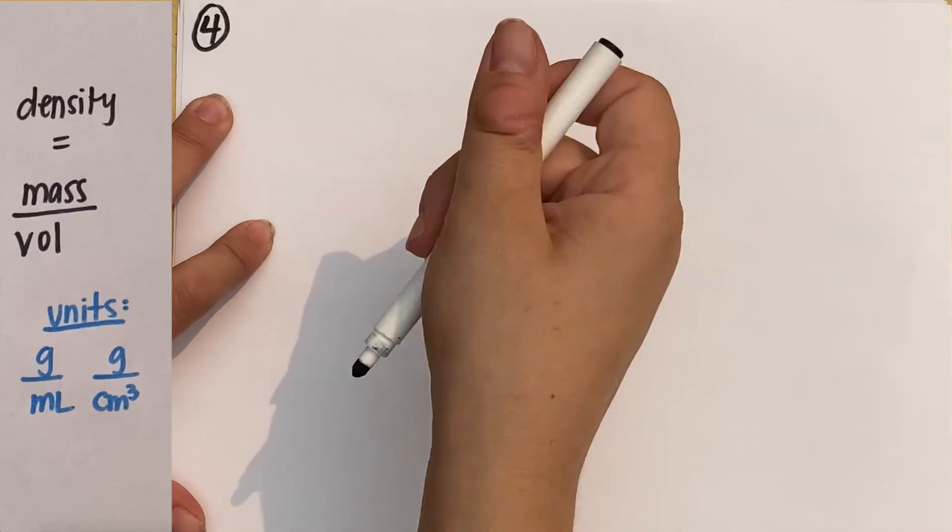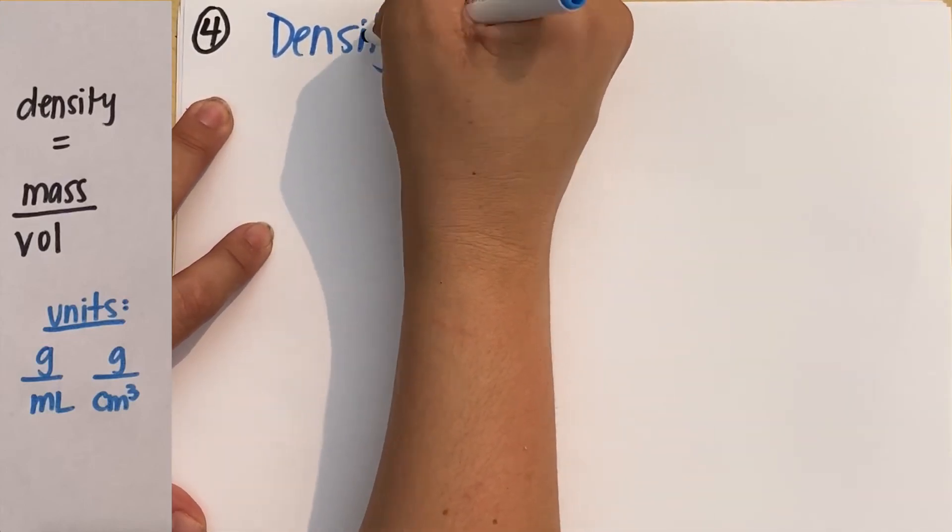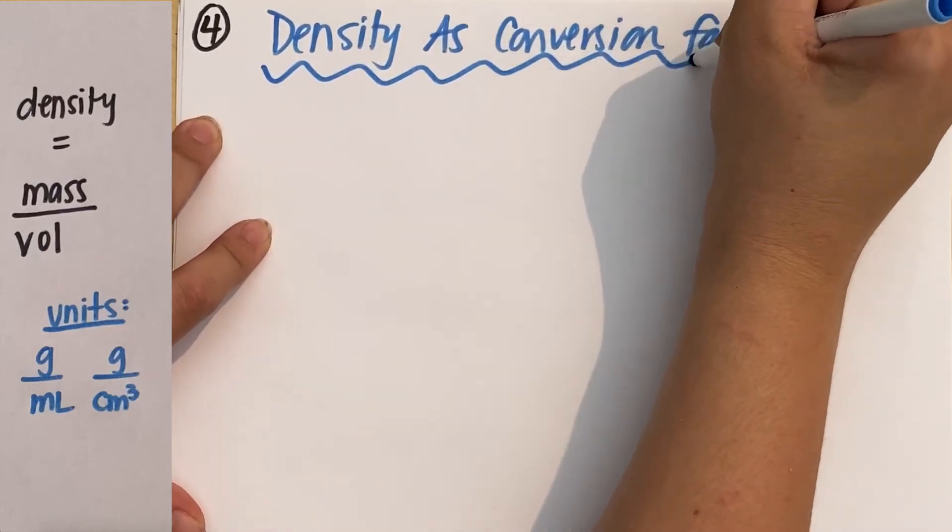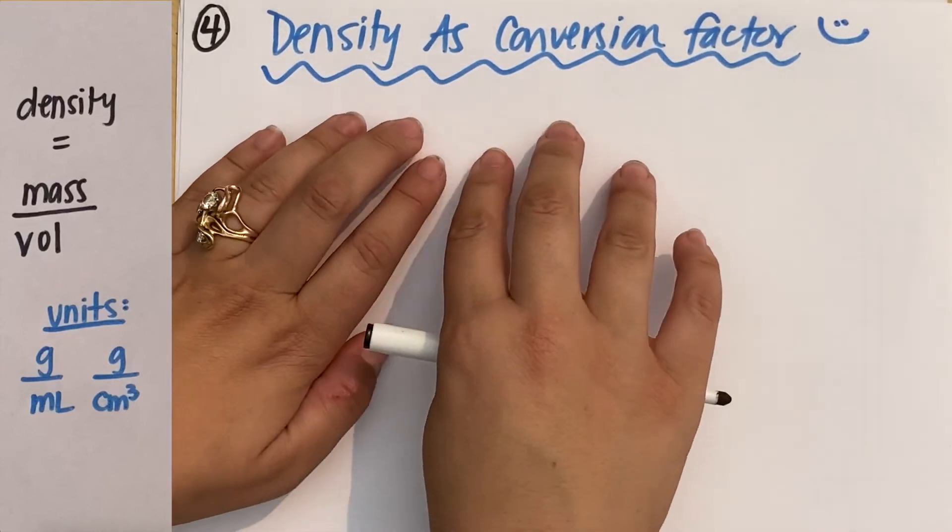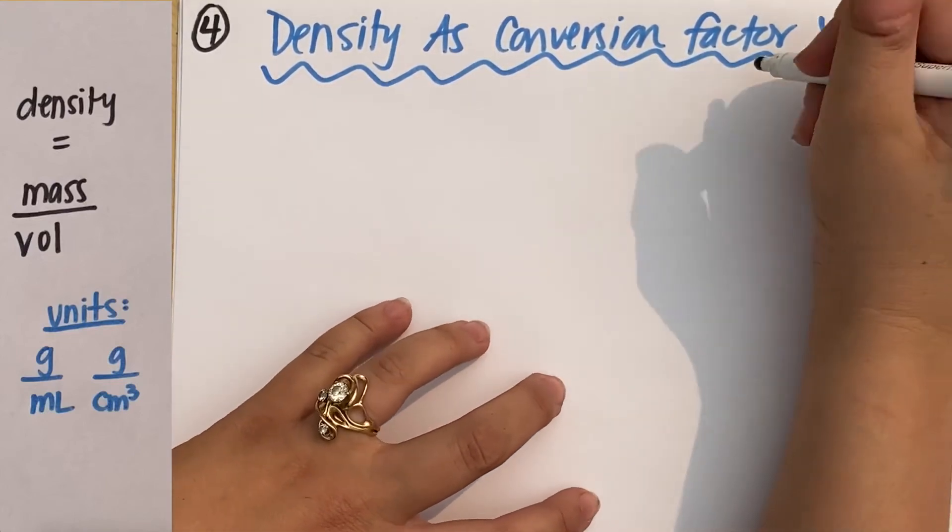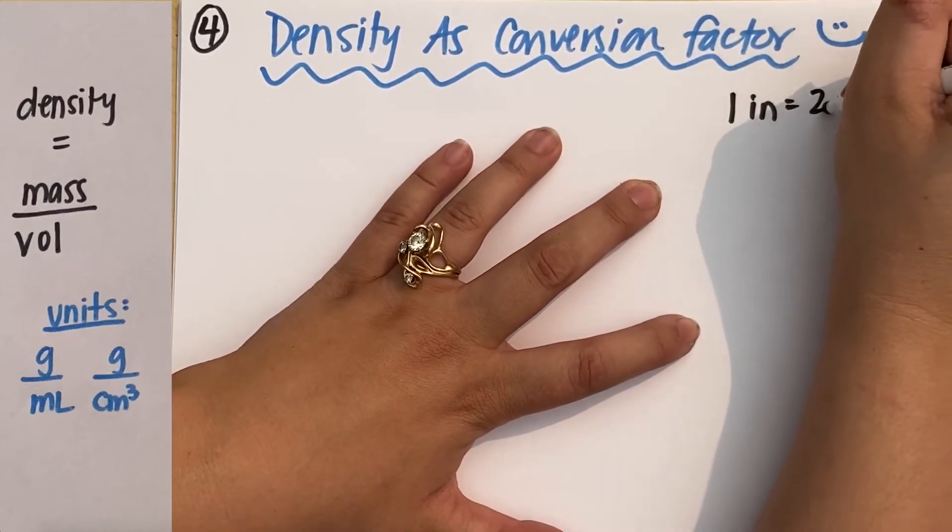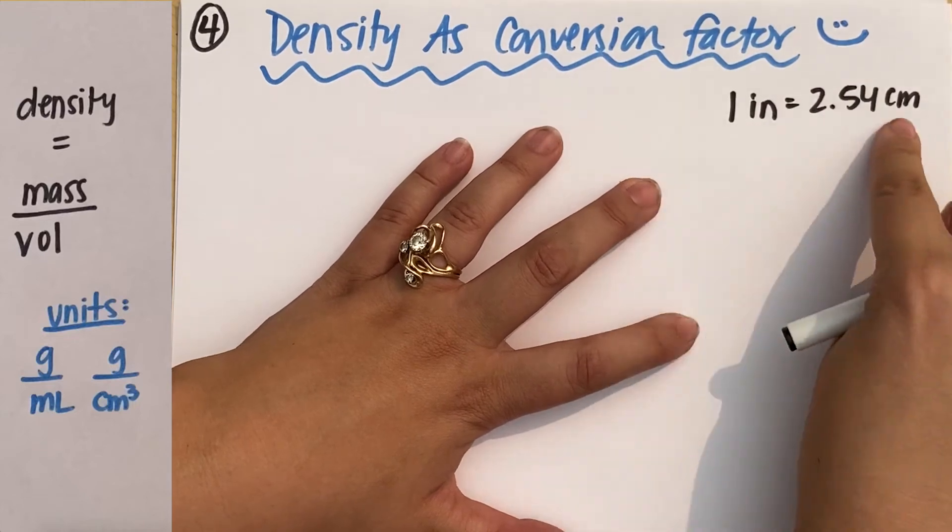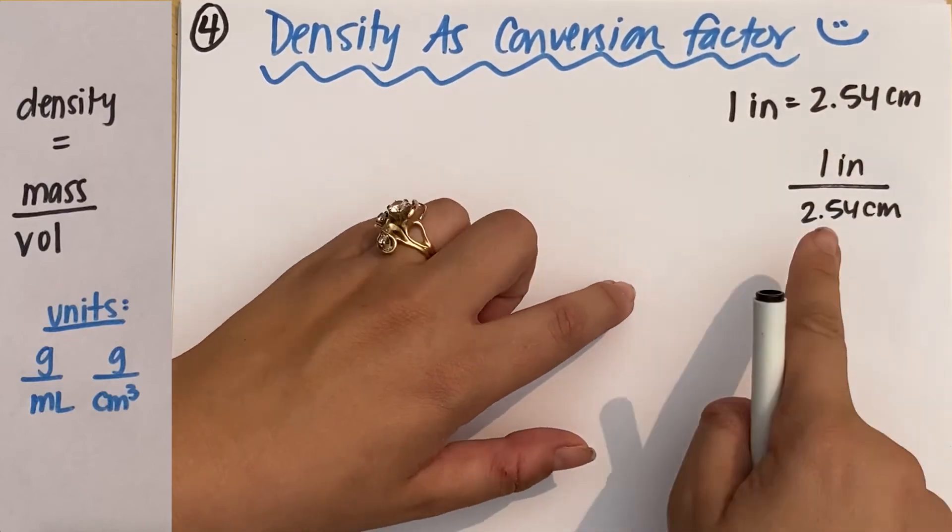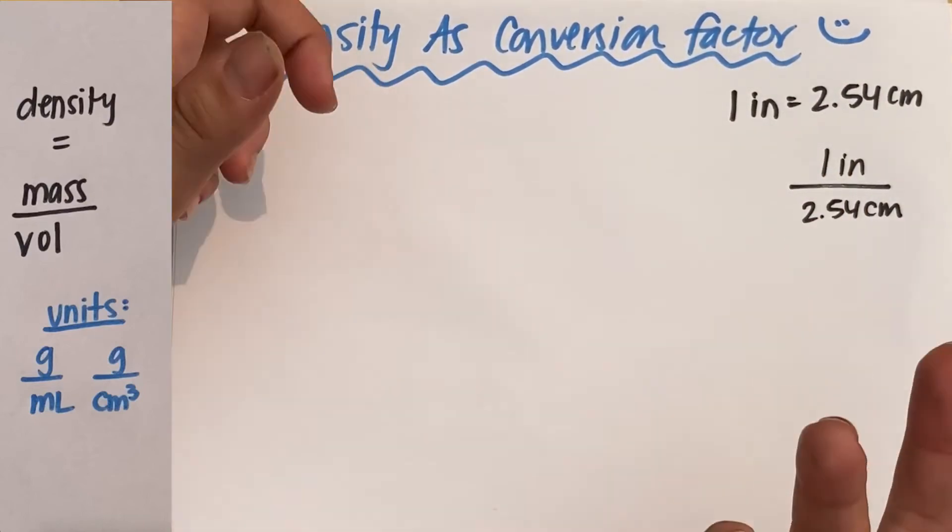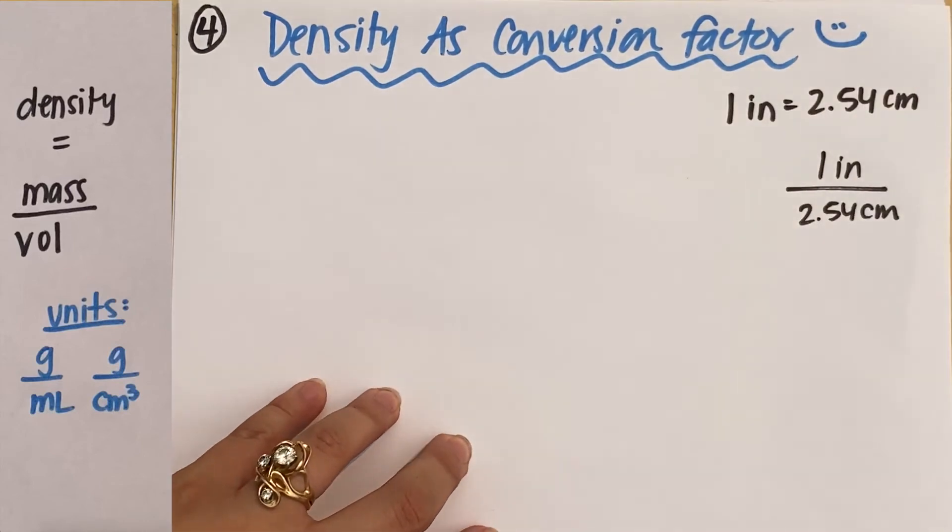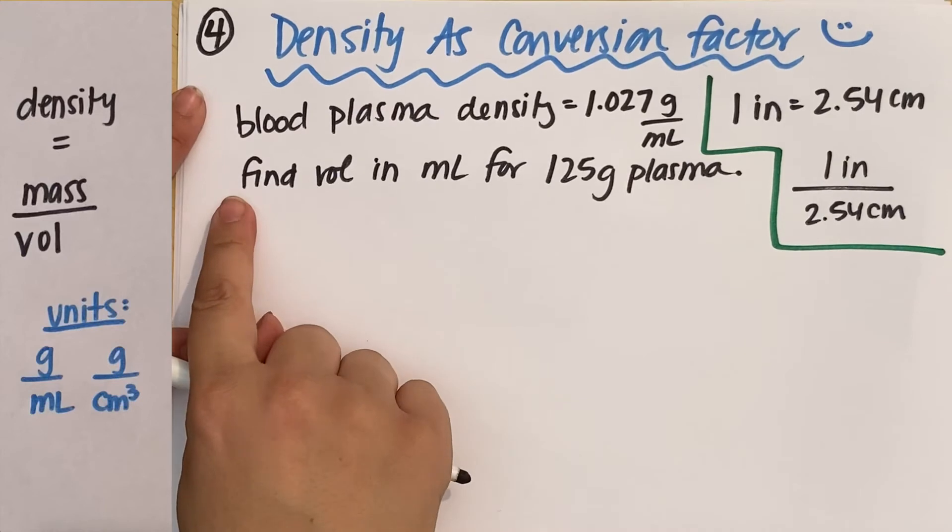And now the trickiest of all. Question number four is going to use density as a conversion. So you can actually use the density of whatever you are working with as a conversion factor. Just like we remember that one inch is 2.54 centimeters, this is a conversion factor. You could set it up like one inch for every 2.54 centimeters. This is exactly like what a density is. A density is one unit over another. So you can use density as a conversion factor and let's do an example of that.